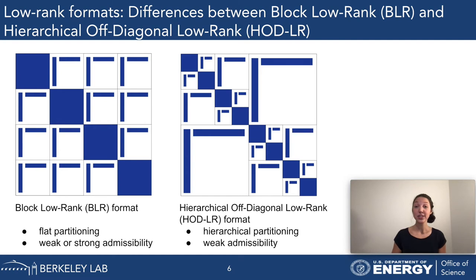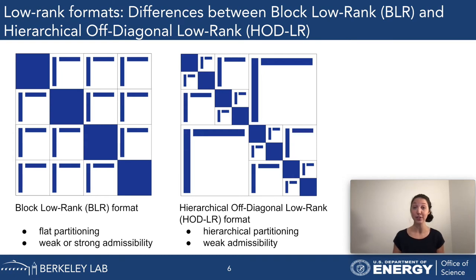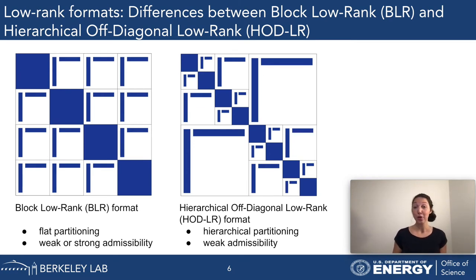For the block-low-rank format we can use either a weak or a strong admissibility condition. What is represented here is the weak admissibility condition, meaning all off-diagonal blocks are compressed. But we could also—and this is how we implemented it—use the strong admissibility condition, which means some of these off-diagonal blocks will actually be dense and not be compressed.